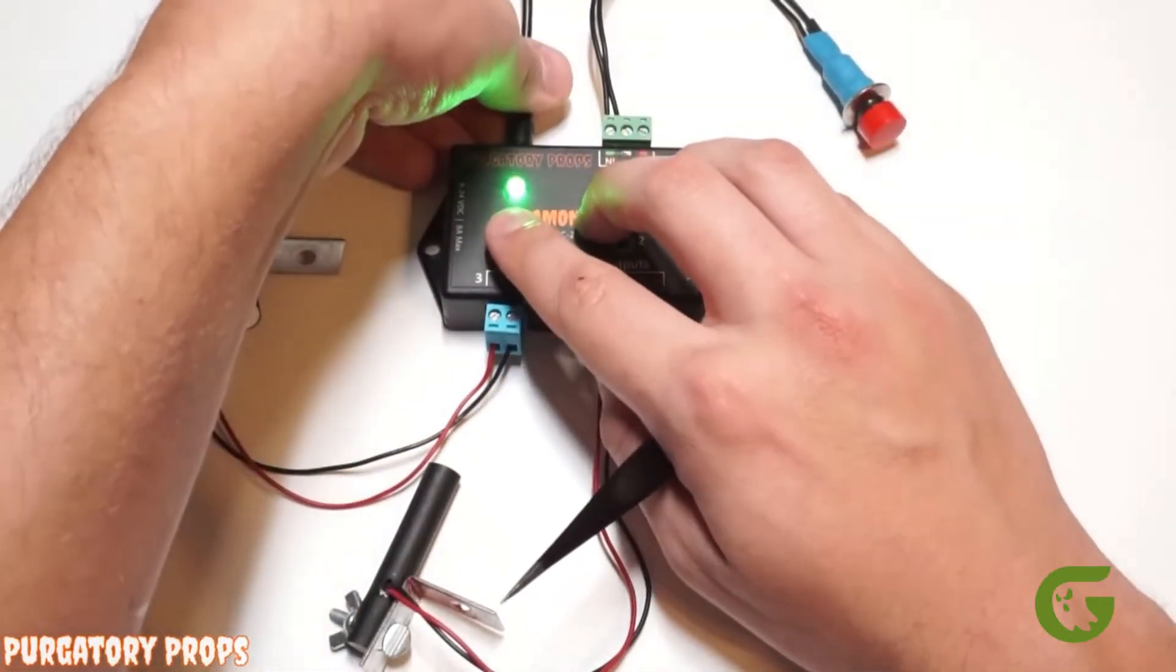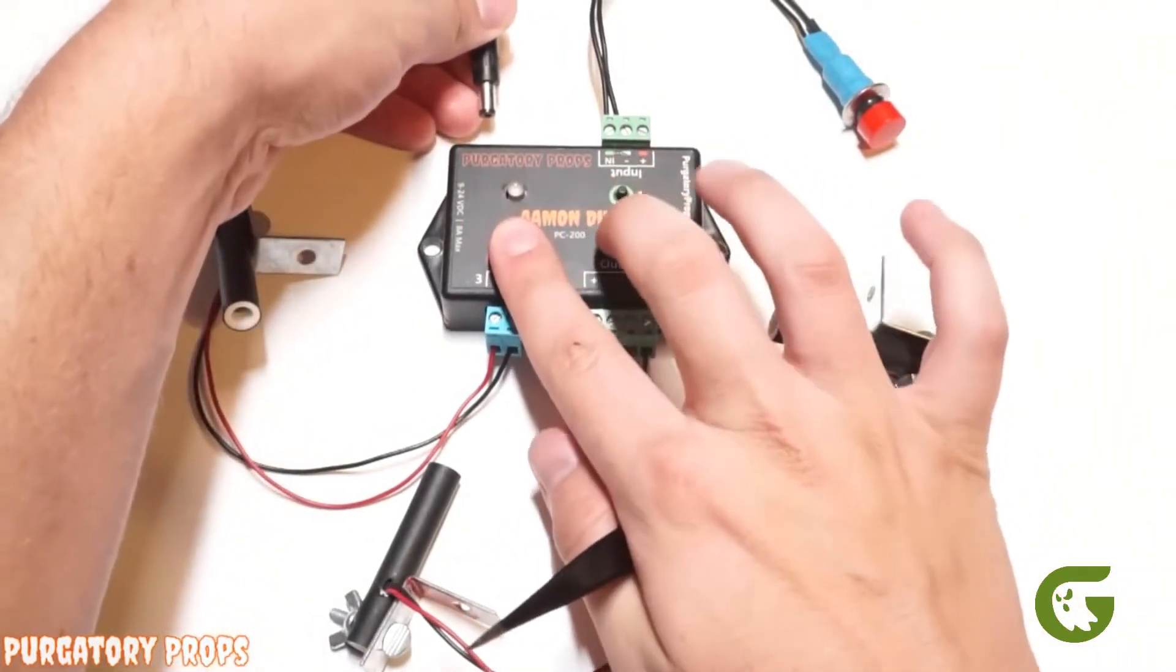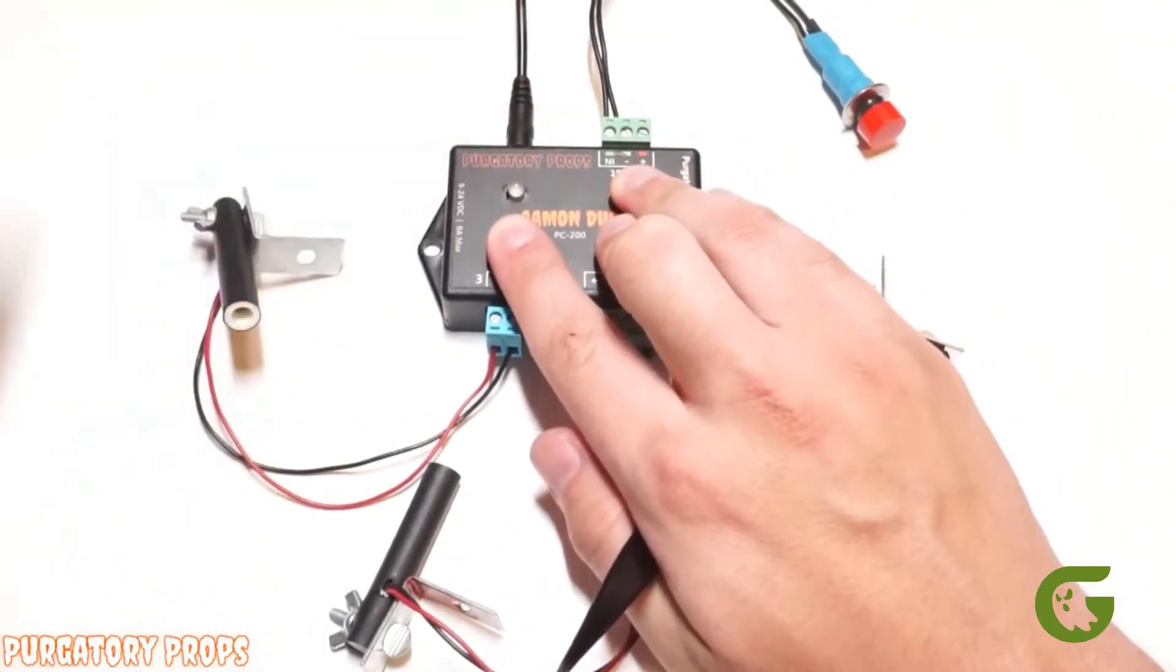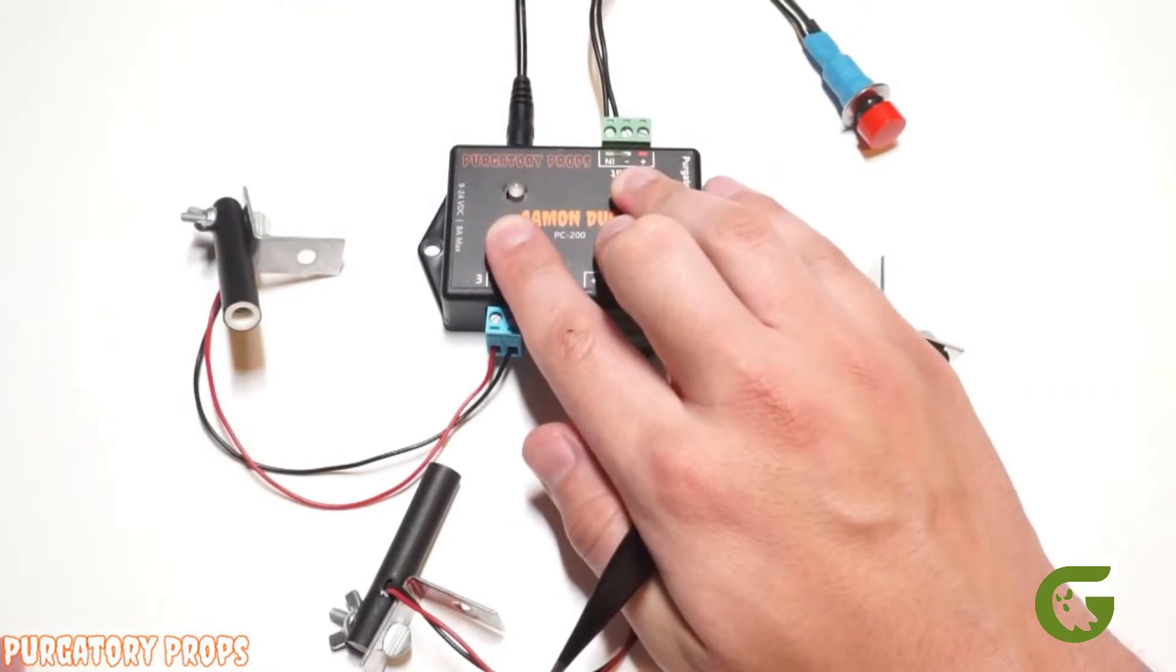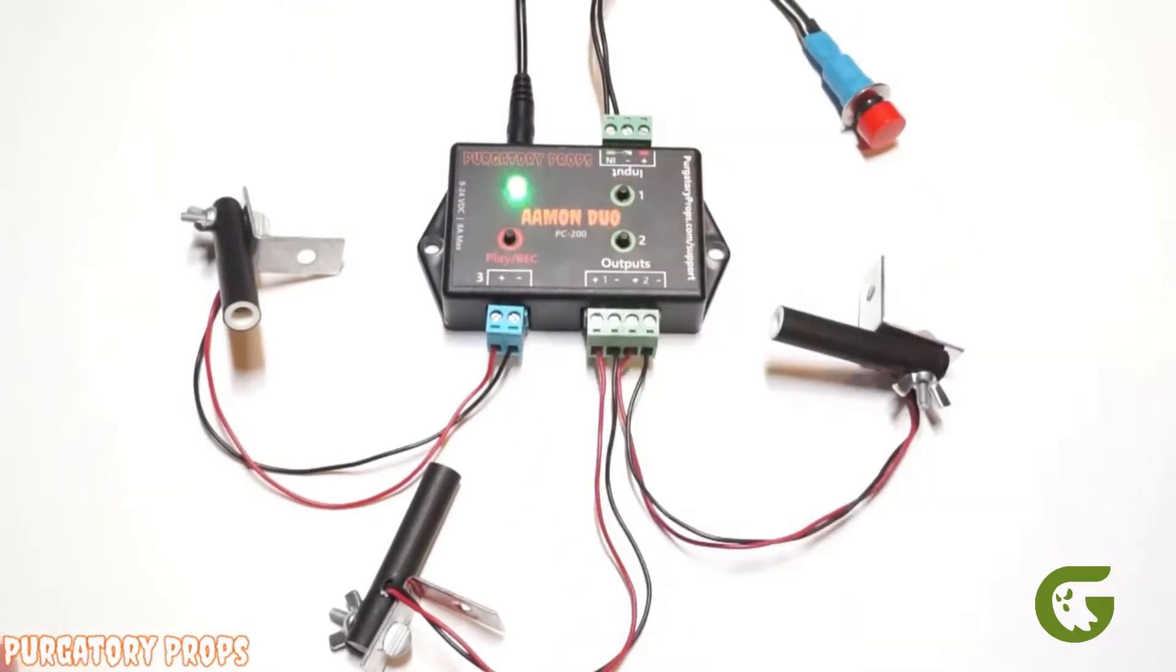And then if we turn this off again, then hold all three buttons, plug it back in. Blue LED and then when it turns red again, we release. This is now in end mode.